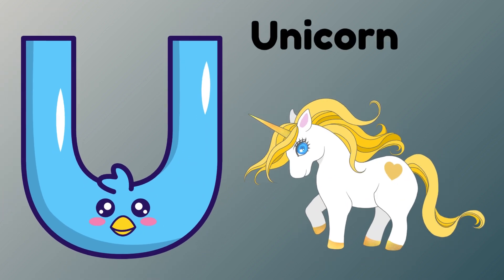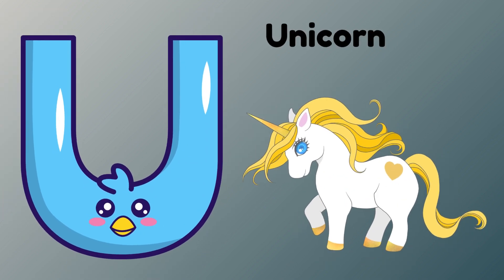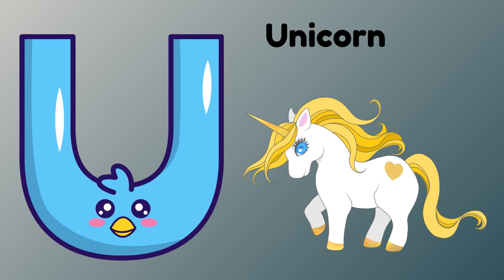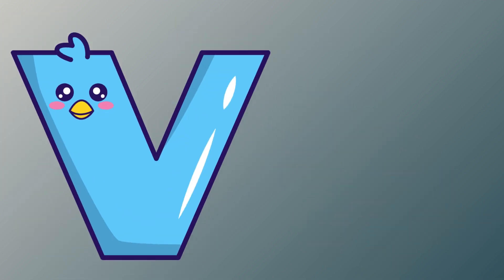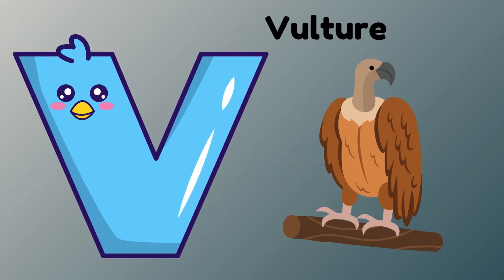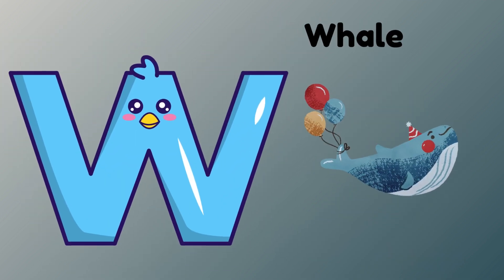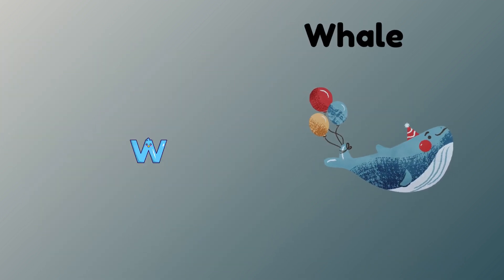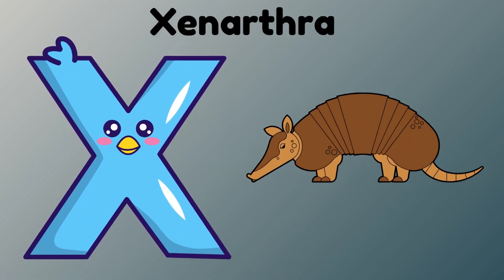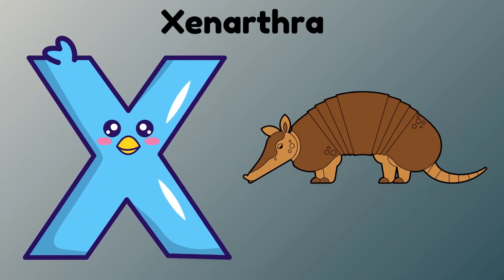U is for Unicorn. U. Unicorn. V is for Vulture. V. Vulture. W is for Wolf. W. Wolf. X is for Xenartha. X. Xenartha.